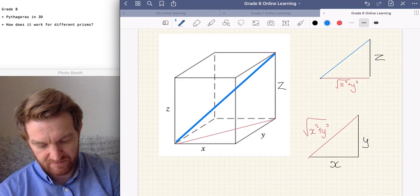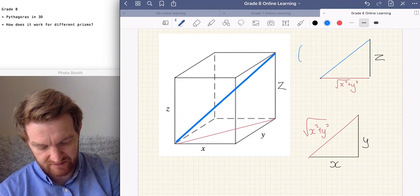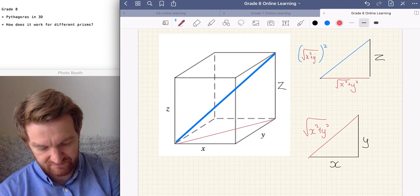And if we are to square this, we will have the square of the square root. So, they're going to cancel out in a second. Plus Z squared.